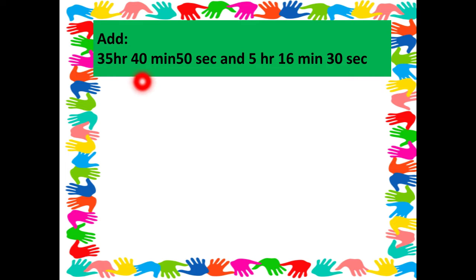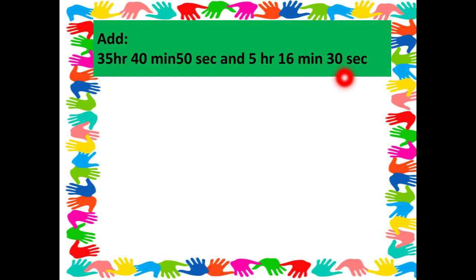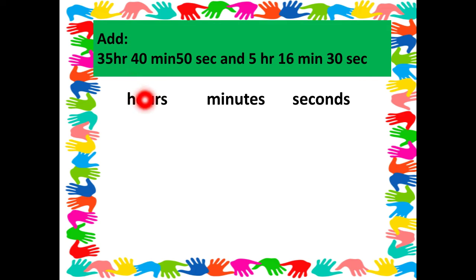We have to add two times. The first is 35 hours, 40 minutes, and 50 seconds. The second time is 5 hours, 16 minutes, and 30 seconds. The first step is to write the different units given to us in the question — here we are given hours, minutes, and seconds.